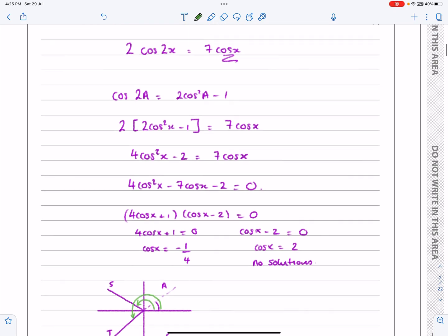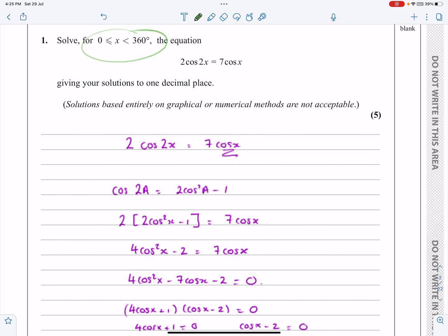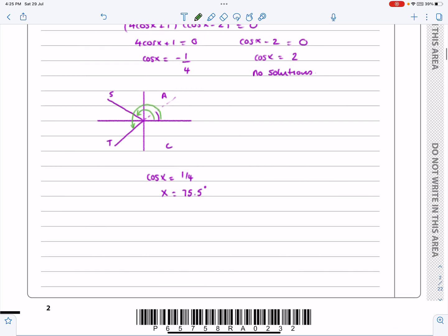If they ask me, which they do, to have it between 0 and 360 degrees. So, short answer then for that is that if cos x equals 1 quarter, that if cos x equals minus 1 quarter, x is equal to 180 minus 75.5, which is 104.5, and 180 plus 75.5, which is 255.5 degrees.